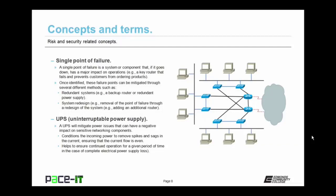You should also be familiar with Uninterruptible Power Supplies, or UPS. A UPS will mitigate power issues that can have a negative impact on sensitive networking components. It conditions the incoming power to remove spikes and sags in the current, helping to ensure that the flow of current is even and consistent, which is very beneficial to your electronic and networking components. They also help to ensure continued operation, at least for a given period of time, in the case of complete electrical power supply loss. Depending upon your UPS, you may be able to run for minutes, hours, or possibly days if you have a generator.